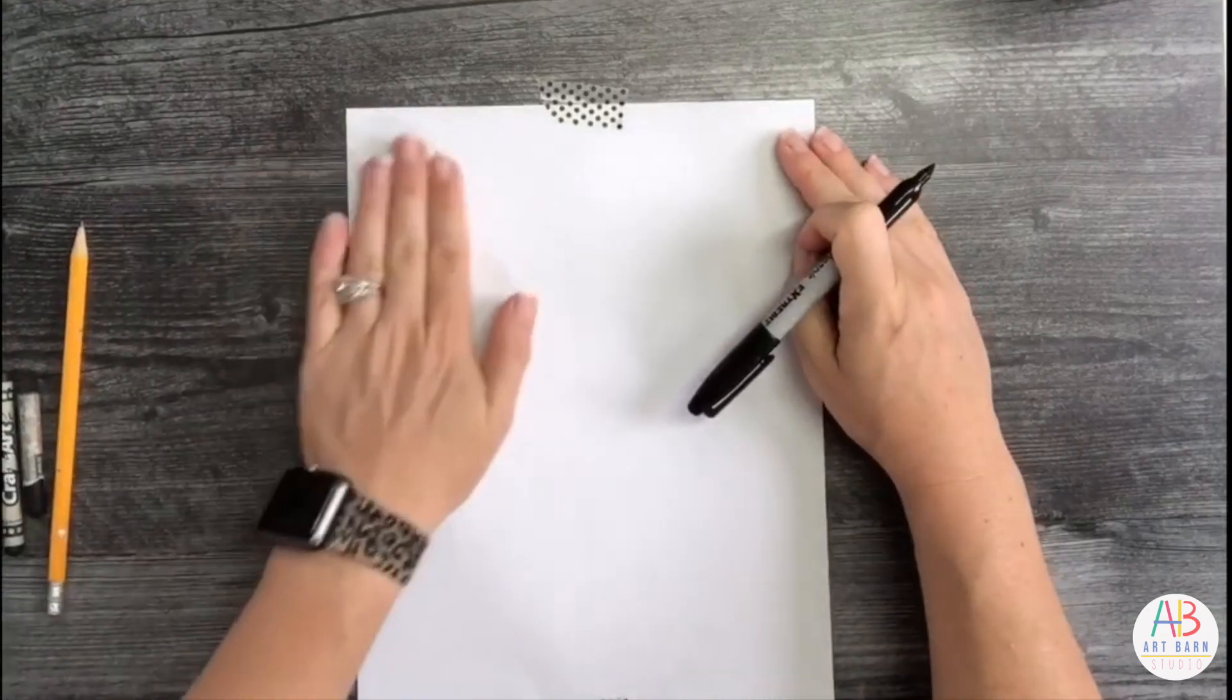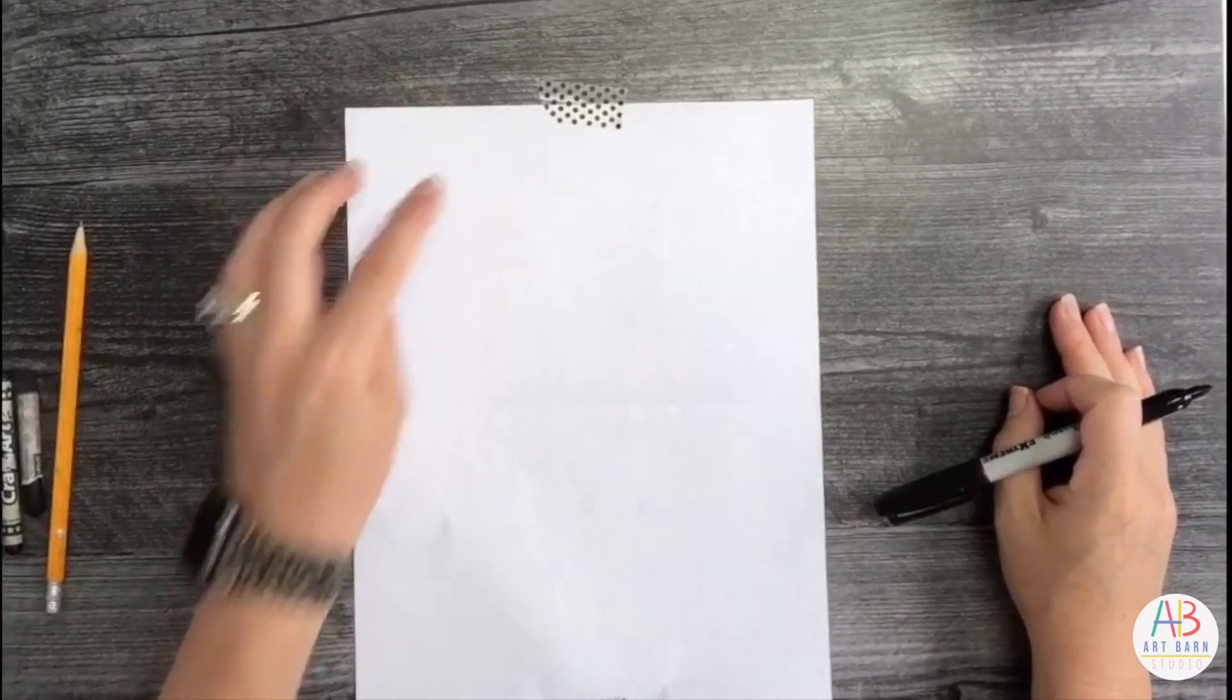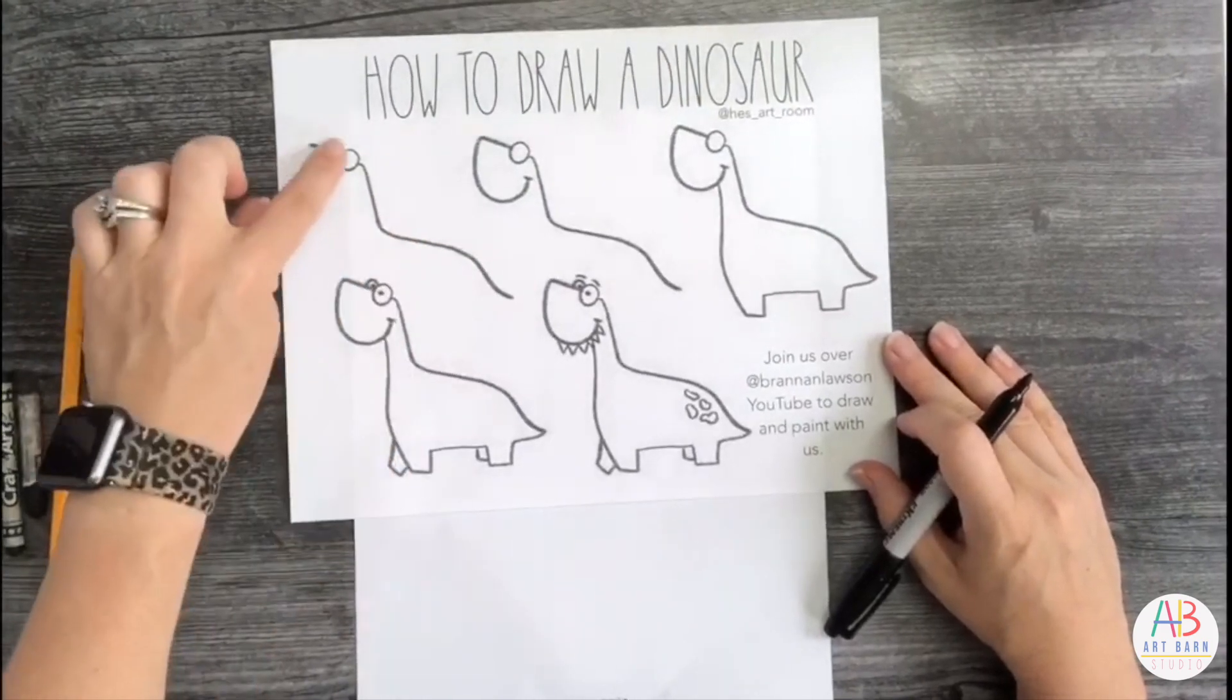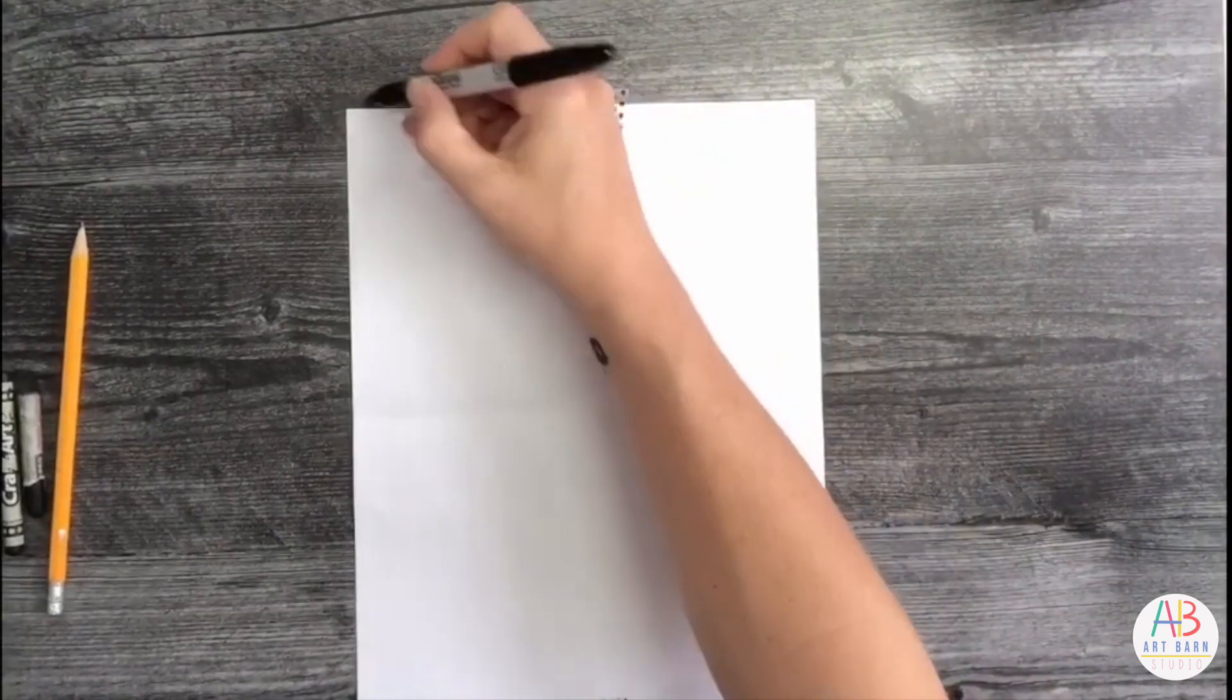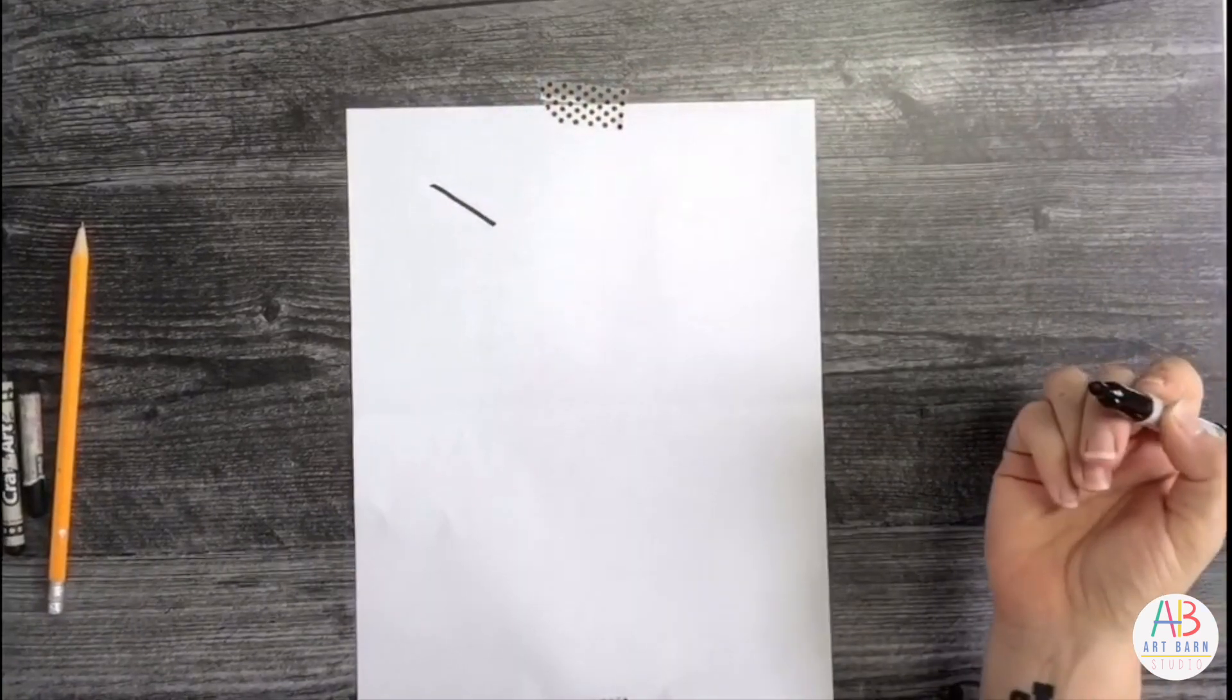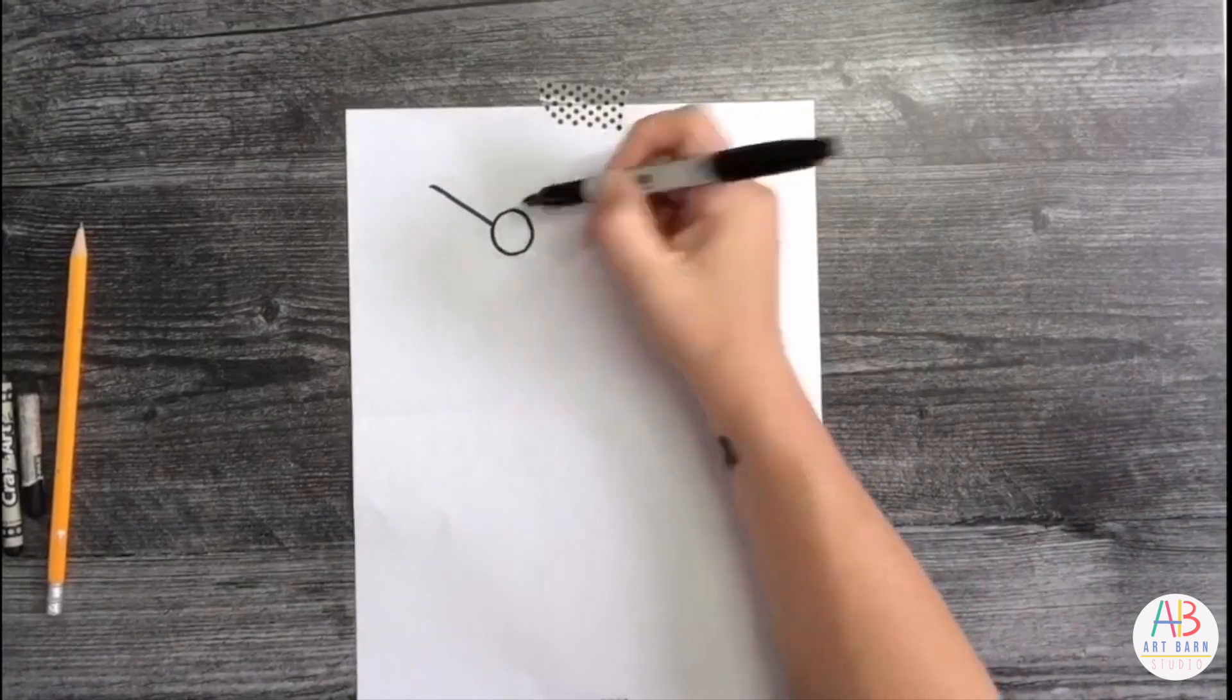The first thing we're going to do is start above the fold towards your left corner and we're going to start with the tip of the nose, the circle of the eye, and then the back of the body. I know this is a difficult line to see compared to where you're putting it, but that's where we're going to start.